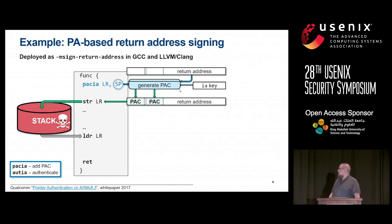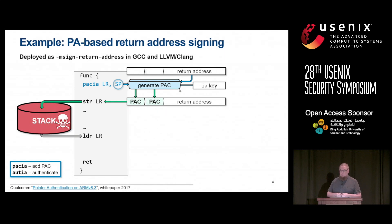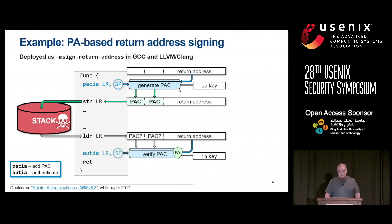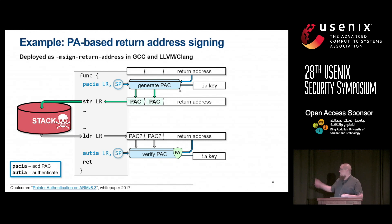The protection works by adding PAC instructions before we store the return address, generating a PAC and embedding it into the return address itself. The instrumentation uses the stack pointer value as a modifier. Then, before return, after the address is loaded from the stack, we verify that the PAC is intact, preventing these attacks. The attacker could still modify the return address on the stack, but this verification will detect that, causing the subsequent return to fault.